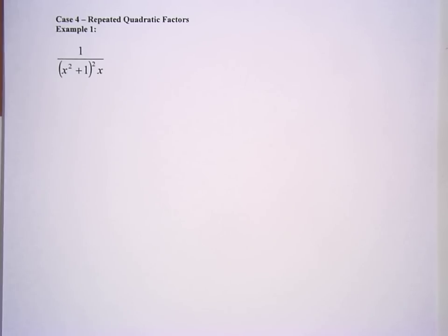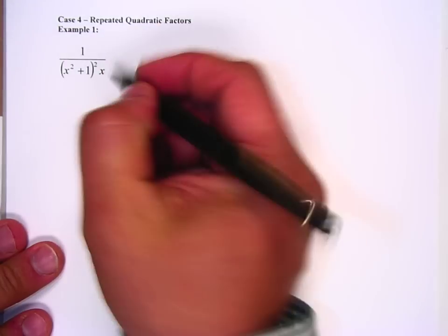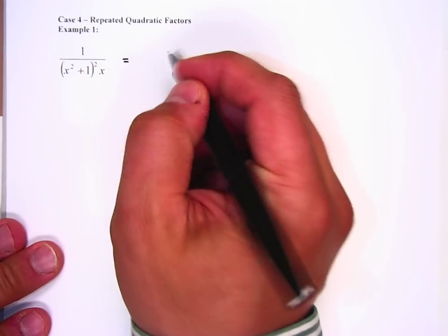So here's case 4, which is repeated quadratic factors. It's just like repeated linear factors, with the exception that we're going to change the numerator. So this one's going to be a little bit trickier, but we have 1 over (x squared plus 1) squared times x. So let's split this up.